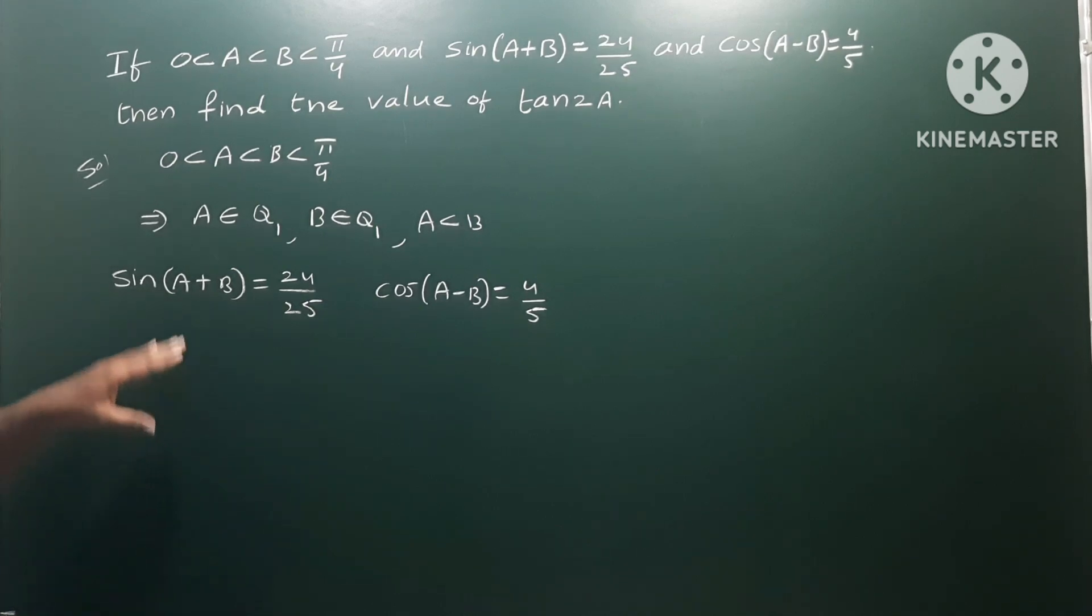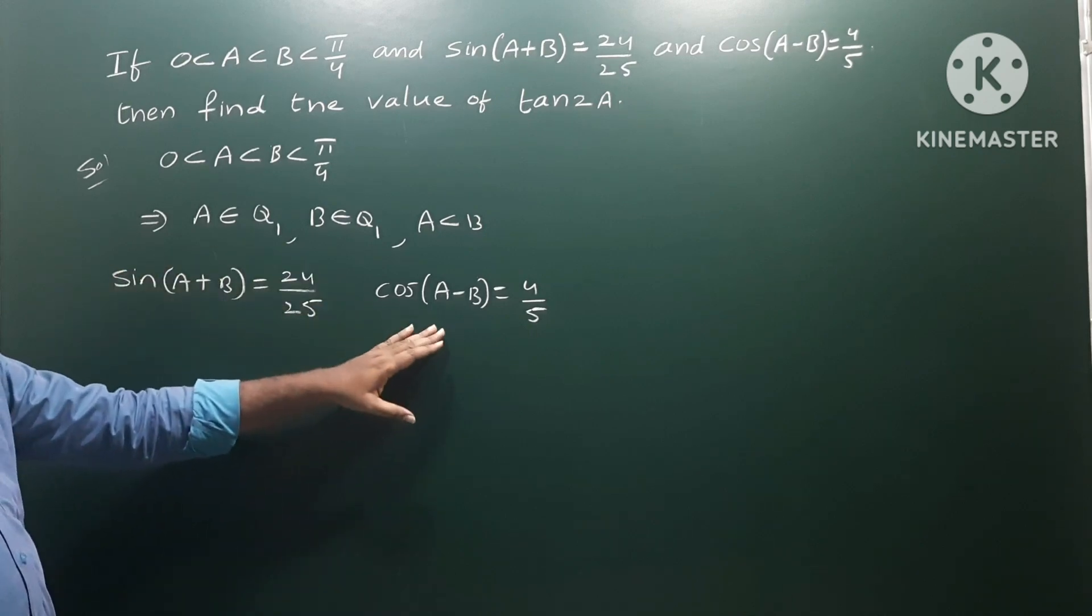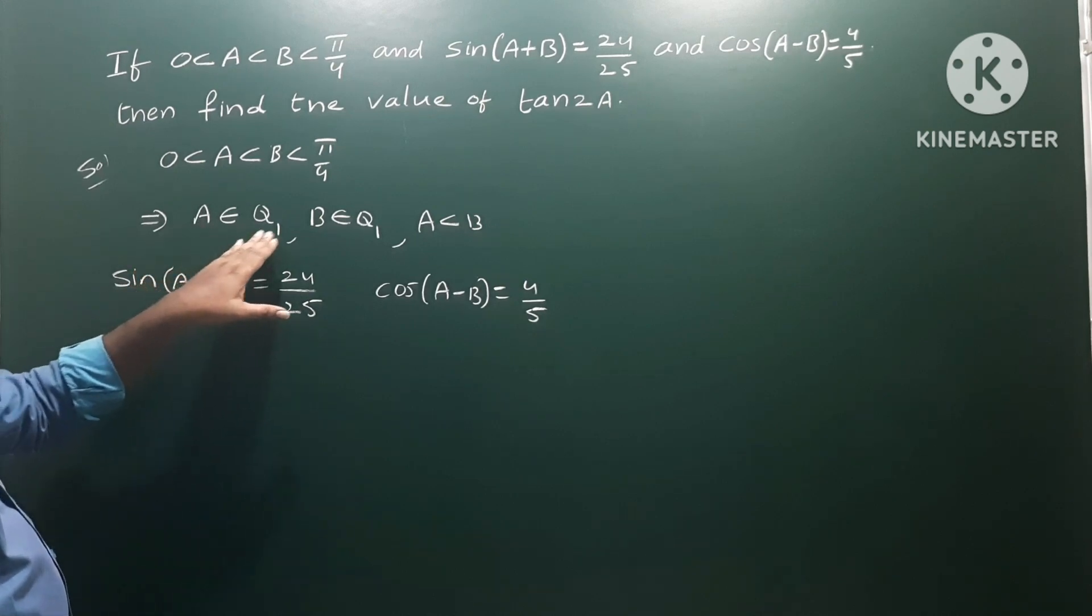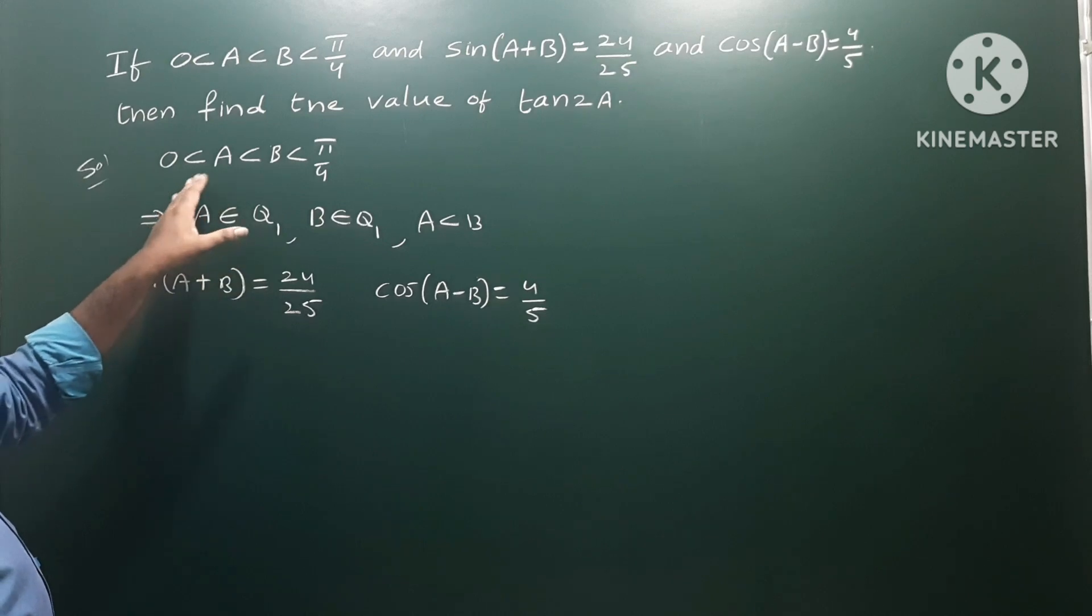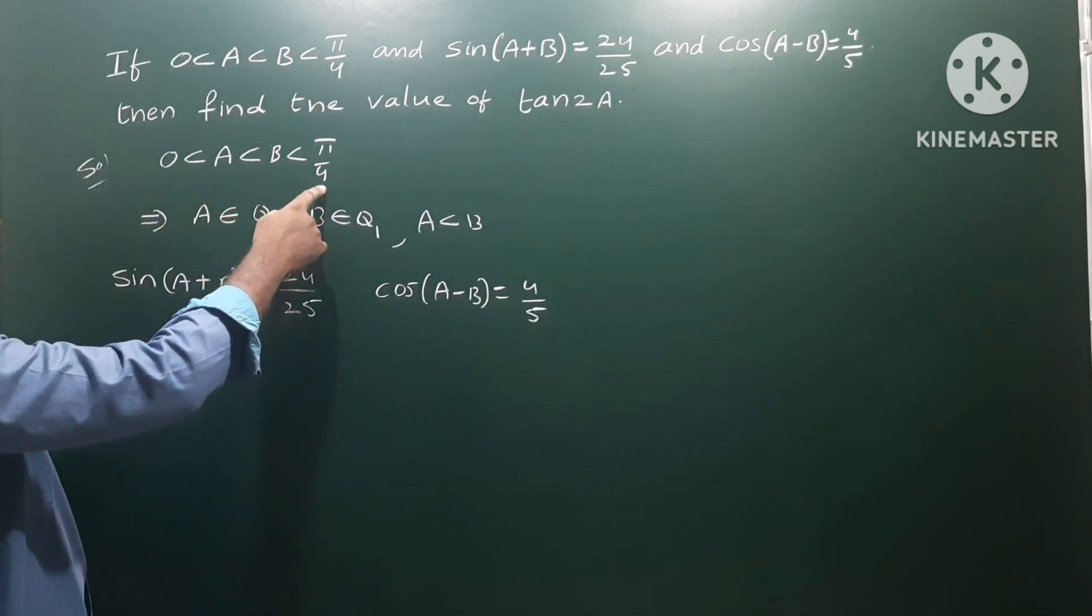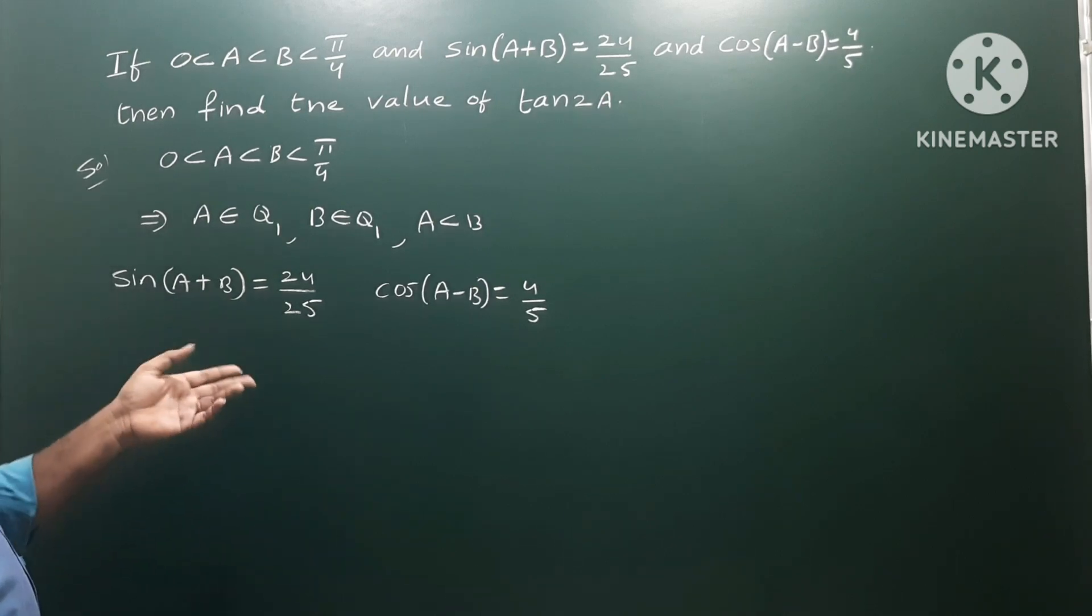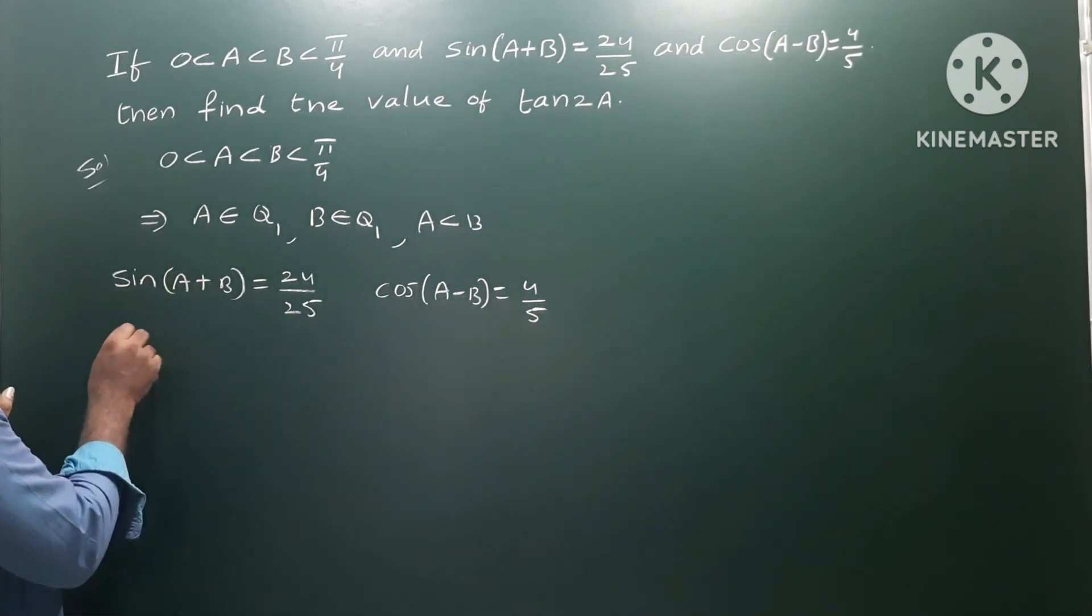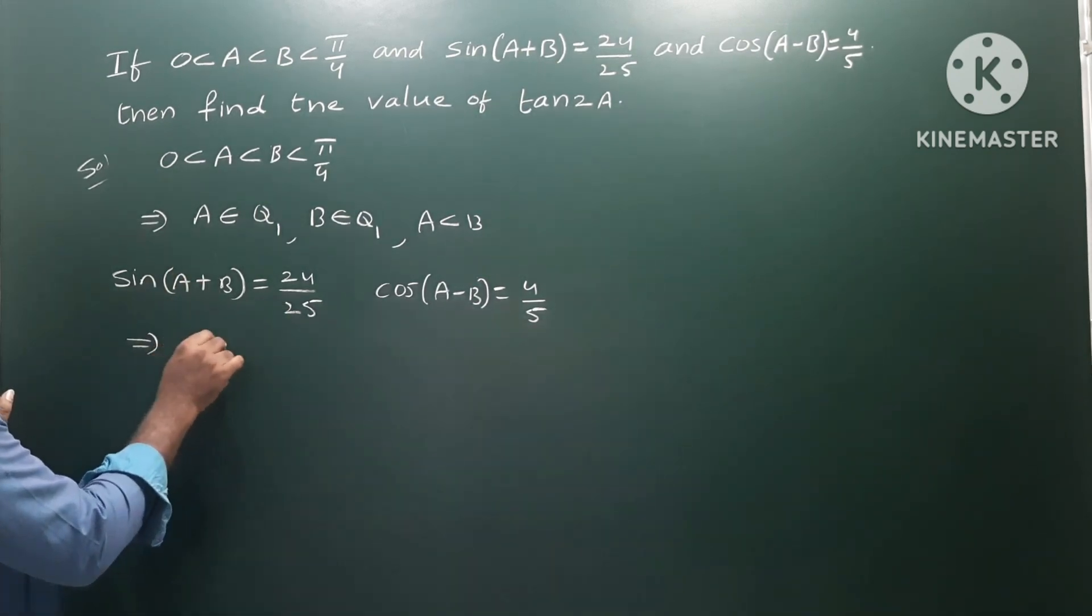We will calculate where A+B is in which quadrant and A-B is in which quadrant. Both are less than 45, so both are below 45. We will calculate these angles so that we can find A+B.